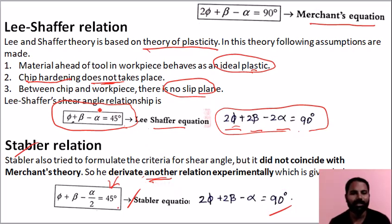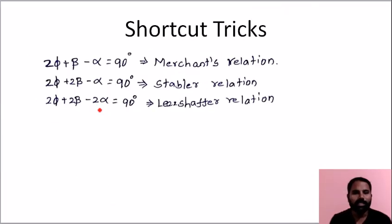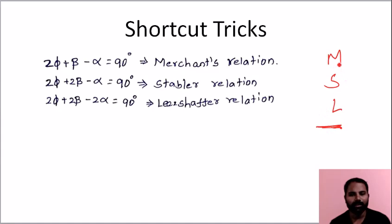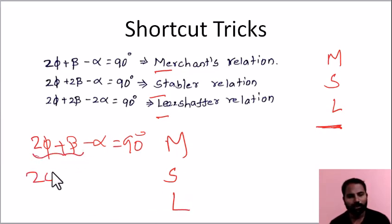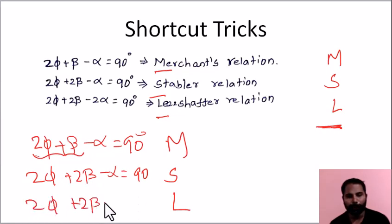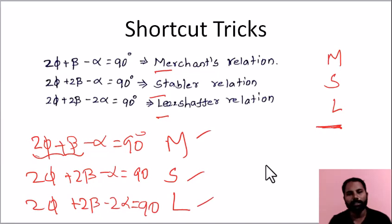In summary, there are four options — Stabler, that is the Merchant equation. We have MSL — mean shear level. First: Merchant equation 2φ + β − α = 90°. Second: Stabler equation 2φ + 2β − α = 90°. Third: 2φ + 2β − 2α = 90°. These are the three theories for minimum cutting force. Thank you.